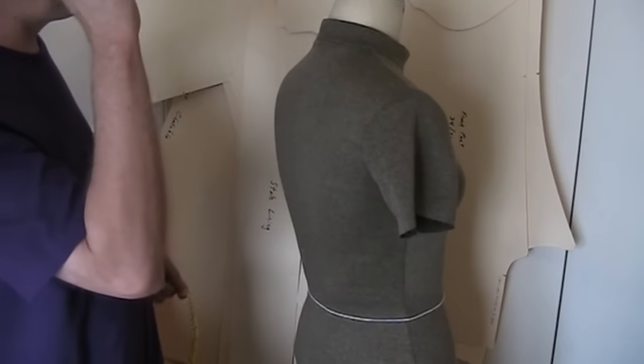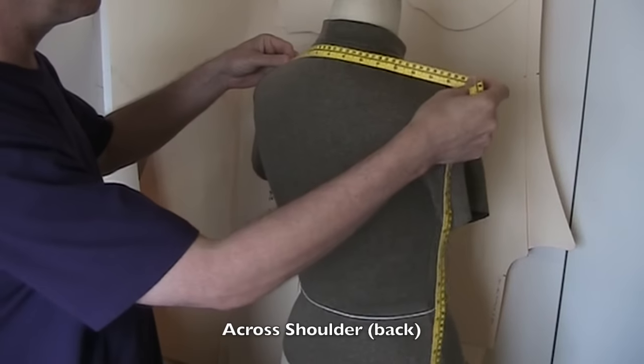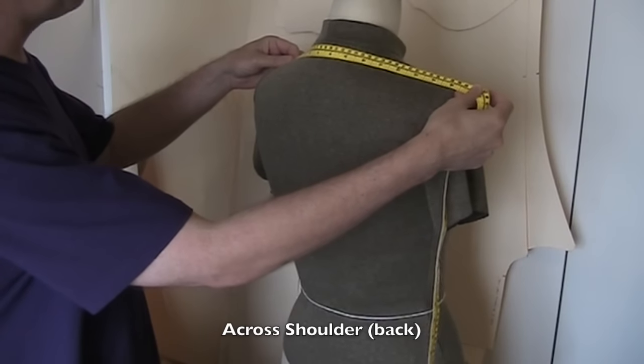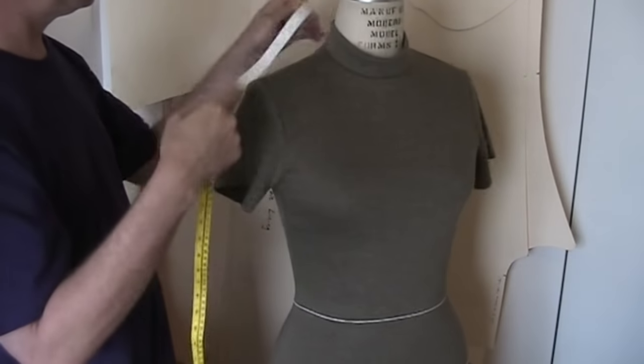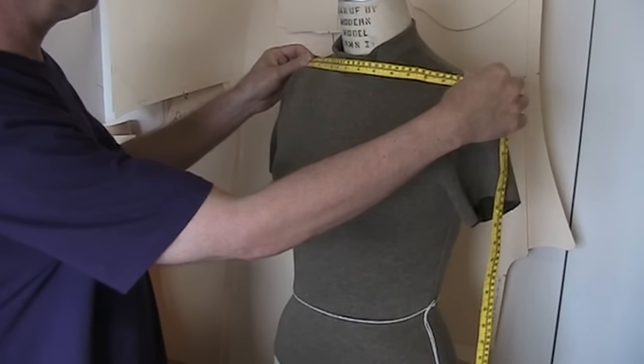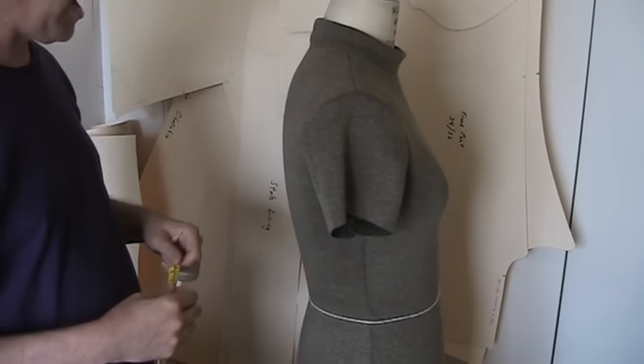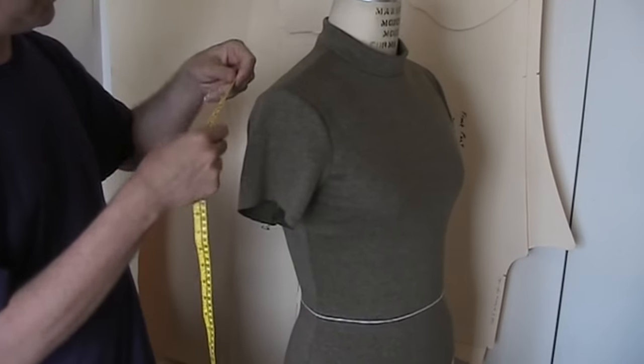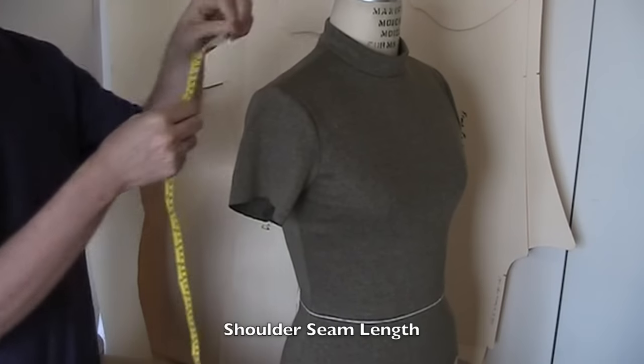We'll need to measure across the shoulders, which we always do from the back. Because the human body is slightly wider across the back than it is across the front. I'm getting 15 inches. See if I measure the same, between the same two points across the front, I'm getting about 14 and a half. So always measure the across shoulder across the back, if you want to be accurate.